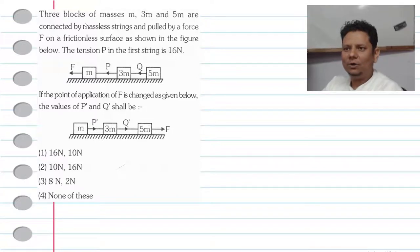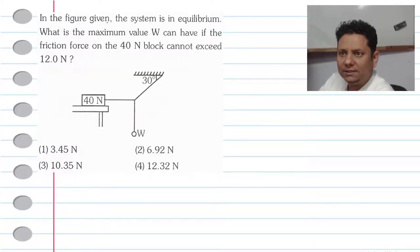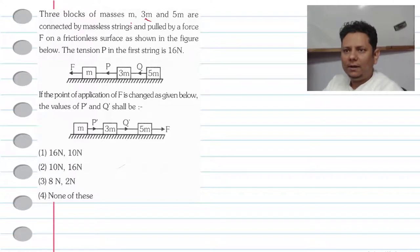Next question. The question says three blocks of masses M, 3M, and 5M are connected by massless strings and pulled by a force F on a frictionless surface as shown in the figure.